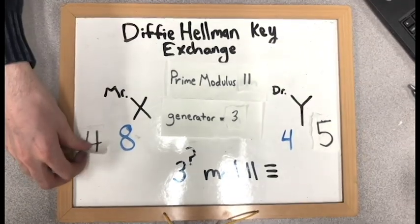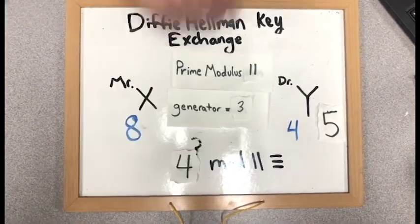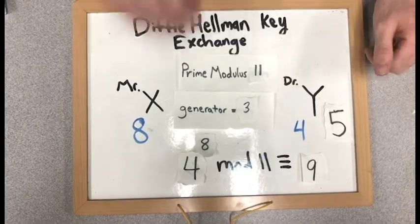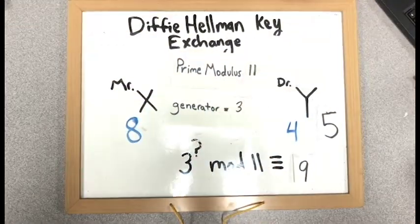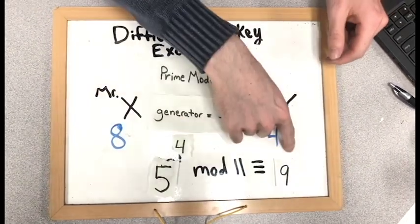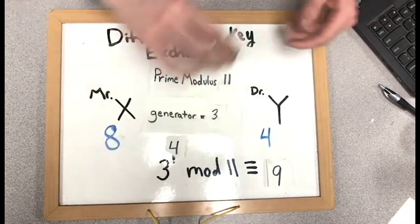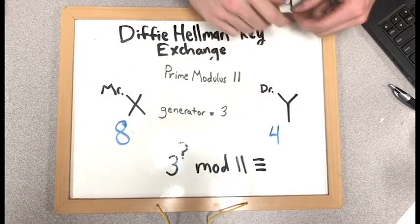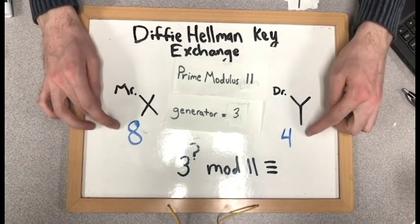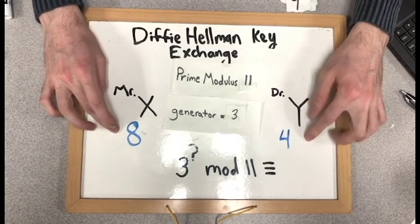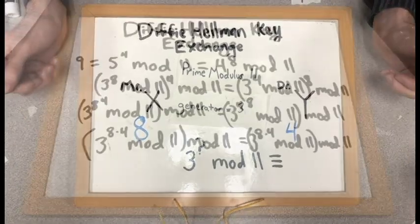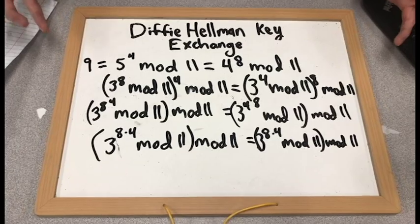Now, here's the solution. X takes the value 4 sent to them by Y and raises it to the power of 8 mod 11, which results in 9. Then Y takes their value 5 and raises it to their private number 4 mod 11 and gets that same value 9. Here, 9 is the private value that they can use to conduct secret communications. This is because without these two private numbers, or one of the two private numbers, it is extremely difficult for Ms. Z to figure out what the key is.